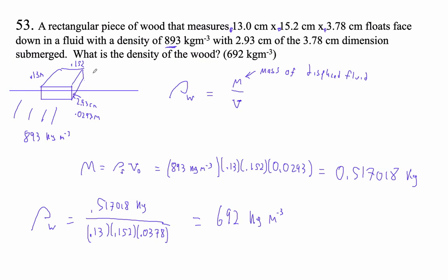If this block had half the density of the fluid, half would be submerged. If it had all the density of the fluid, all of it would submerge. If it had a quarter of the density, a quarter would submerge. If the density of the wood was three quarters of this fluid, it would float with three quarters of it submerged.